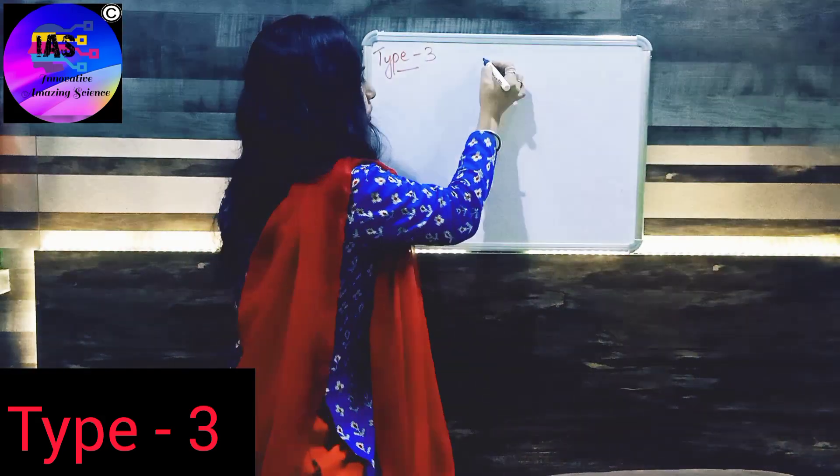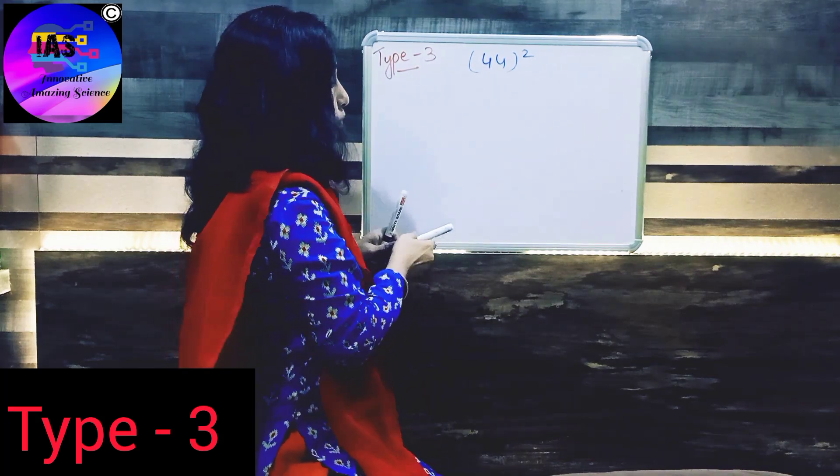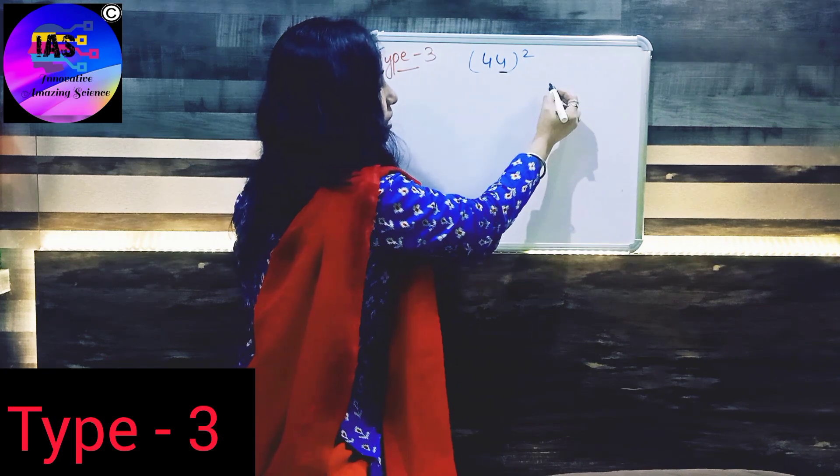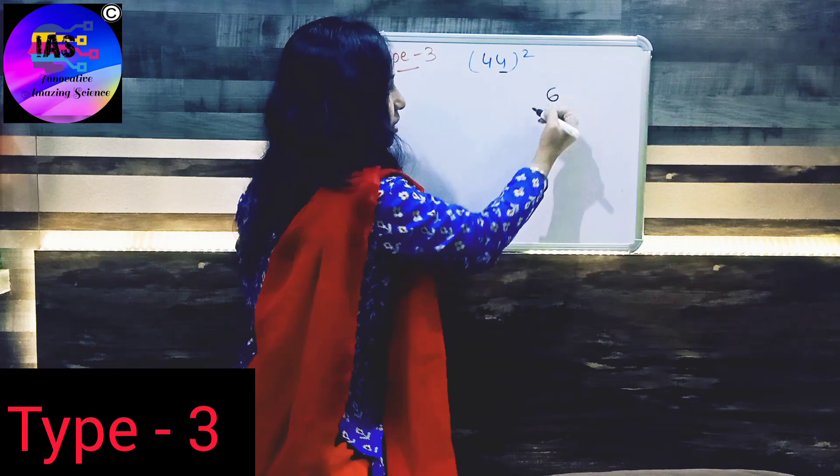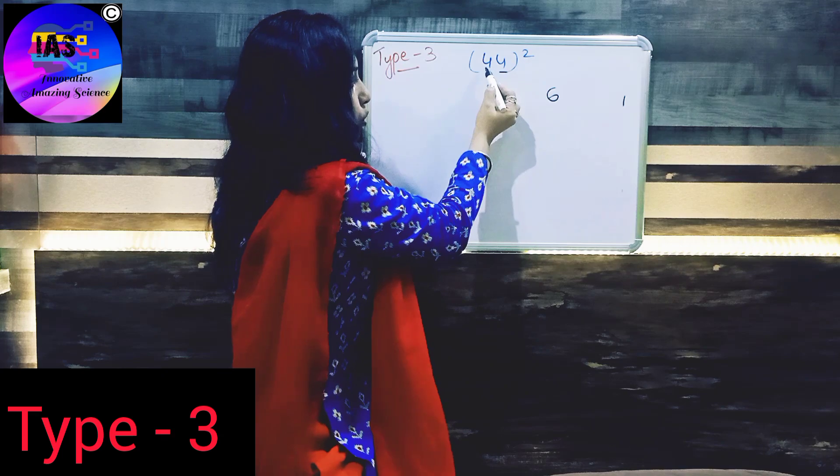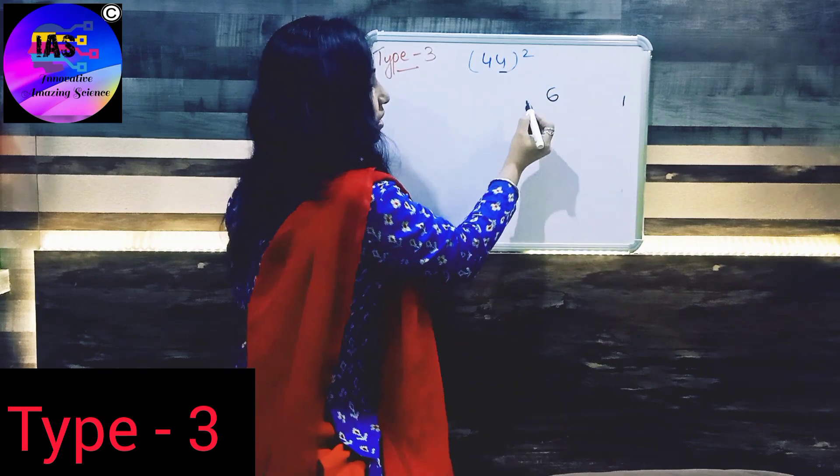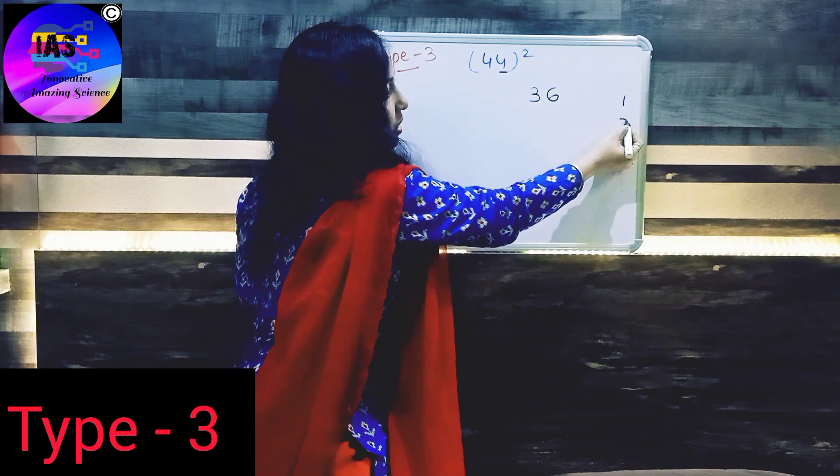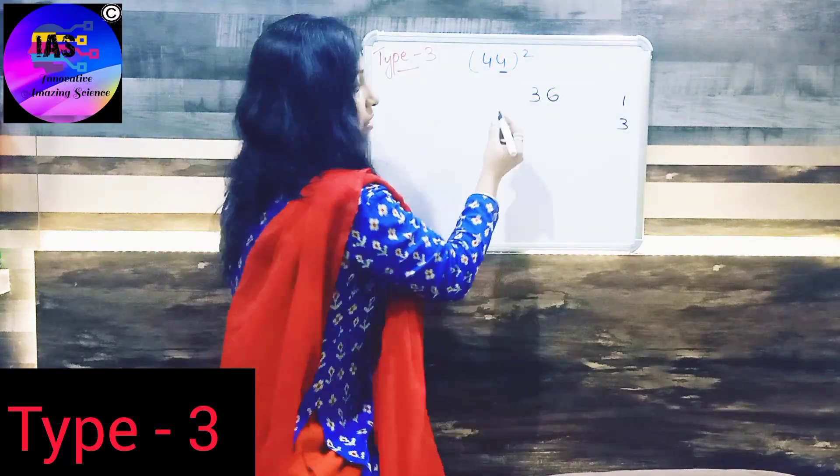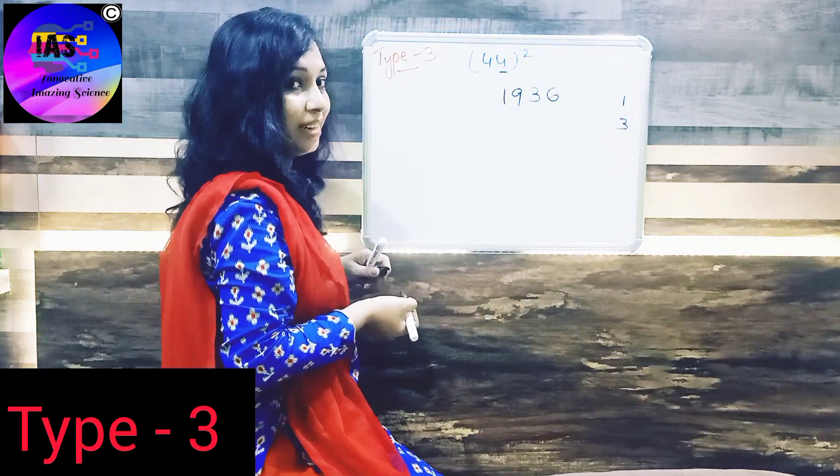Let's take a number 44 square. We just have to remember our formula. Our formula says B square first. Here this is B. B square is 4 into 4 is 16. 6 we will write and 1 will be in our mind. Next, ABC. 4 into 4 is 16, into 2 is 32. And this 1 is 33. So we will write 3 and 3 again in the mind. At A square, 4 square is 16 plus 3 is 19. So 44 square is 1936.